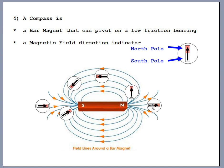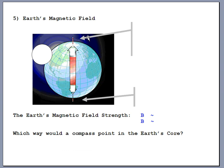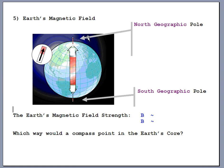This might seem confusing because a compass is supposed to point toward the north end of the earth, yet it looks like it's pointing toward the south end of a bar magnet — so let's talk about what's going on with the earth. The earth is a gigantic magnet. It's physically very large but not very strong, and it does have a north end and a south end. The magnetic B field comes out of the end closest to Australia, travels outside the earth, and dives back in near Canada.